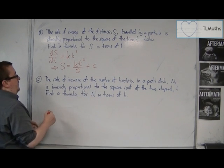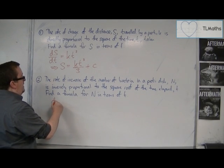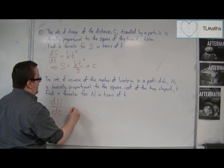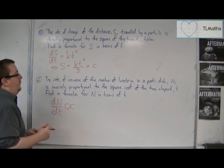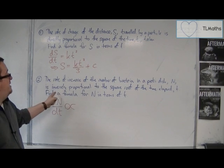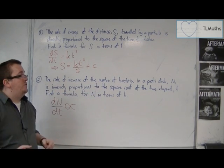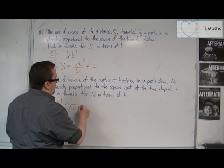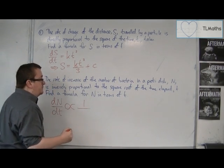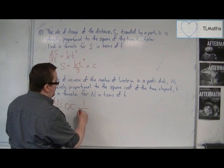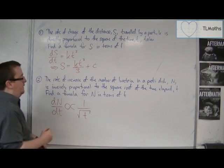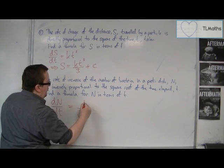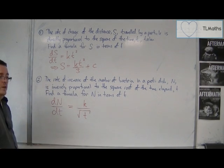The rate of increase of the number of bacteria, as n is increasing with respect to t, is inversely proportional to the square root of the time elapsed. So it's inversely proportional, that's 1 over the square root of t. And so I could say that it is equal to k over root t.